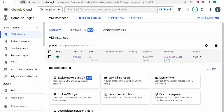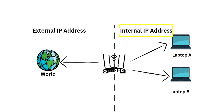The internal IP address is used for communication within the network between instances that are within the same VPC network. It is not accessible from outside the VPC network, so it's not visible over the internet. The virtual machine is installed inside the GCP network, and the internal IP address can only be used inside the Google Cloud network.